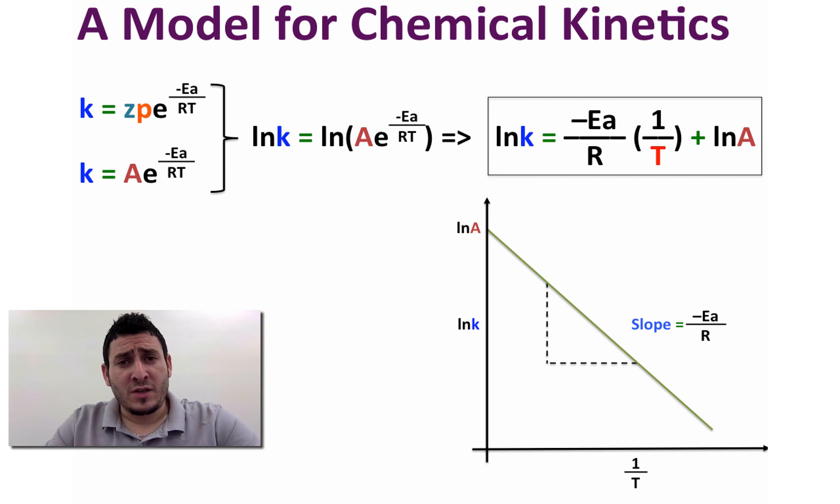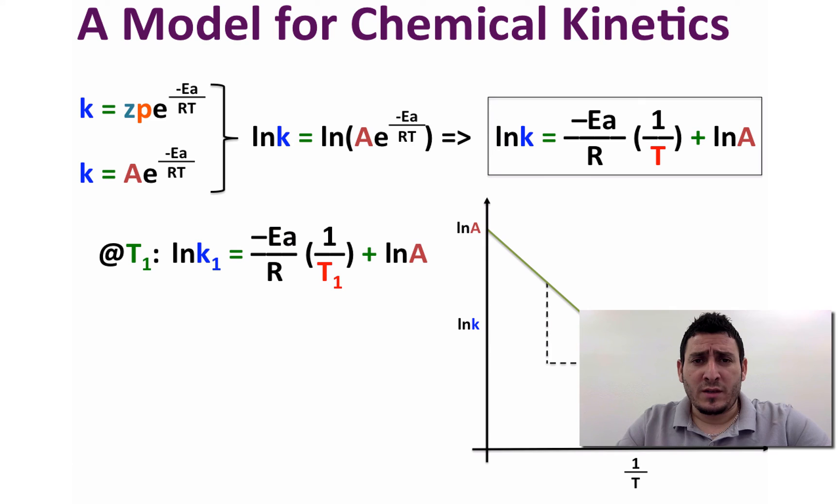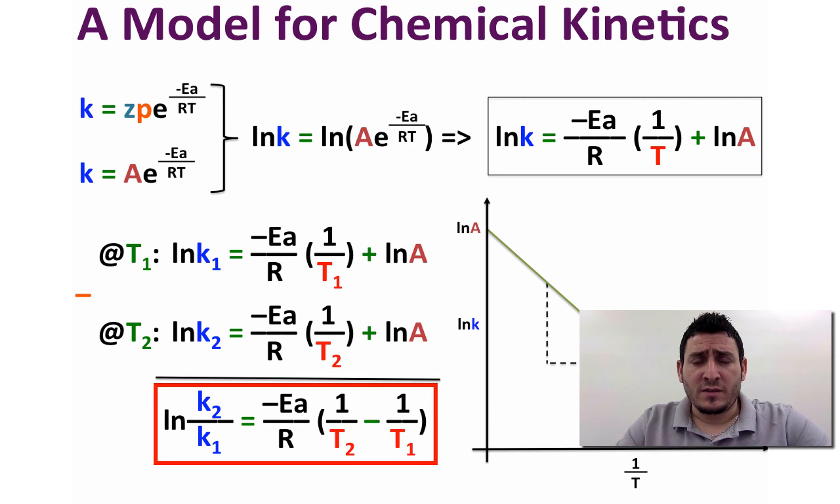This expression allows us to determine the rate constant at different temperatures. For example, at a temperature T1, ln of k1 could be written as follows. At a temperature T2, ln of k2 could be written as follows. Subtracting these two expressions we get ln of k2 over k1 equals minus Ea over R times 1 over T2 minus 1 over T1.